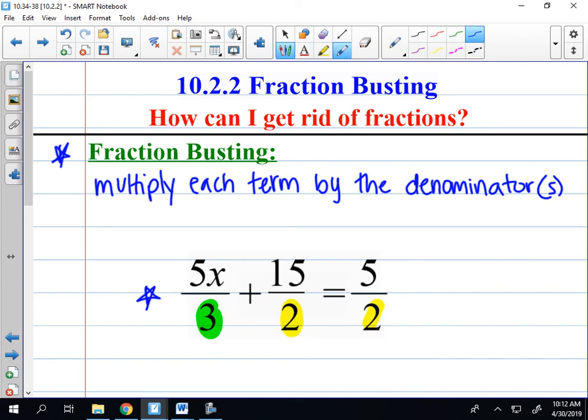So I'm going to write out what it looks like to multiply by each of those numbers. I'm going to multiply by three and I have to do it to each part of my equation to keep it balanced, and then I'm going to multiply by two to each part of my equation.